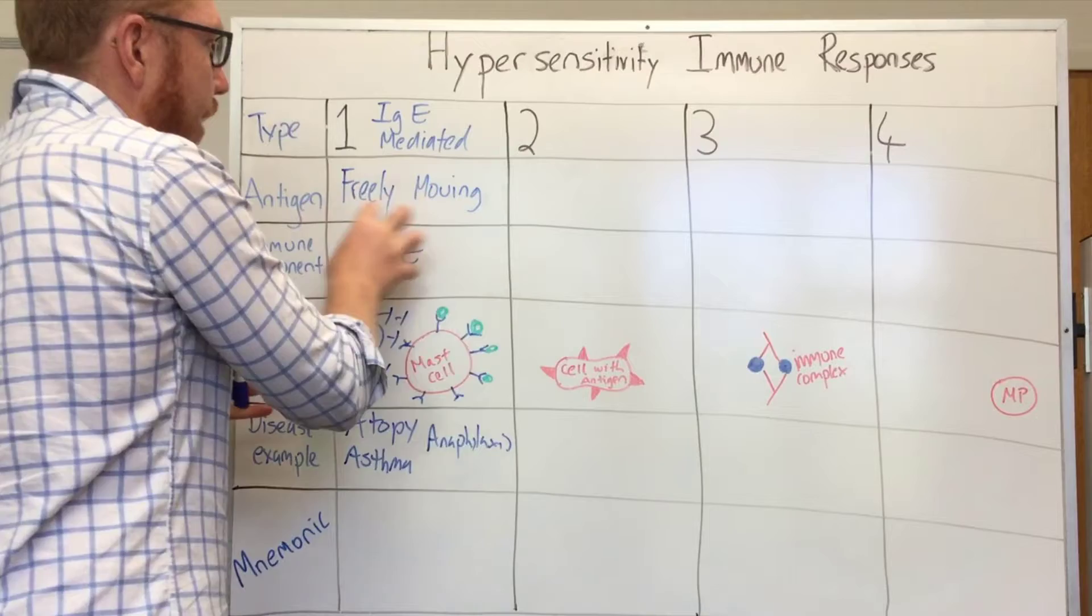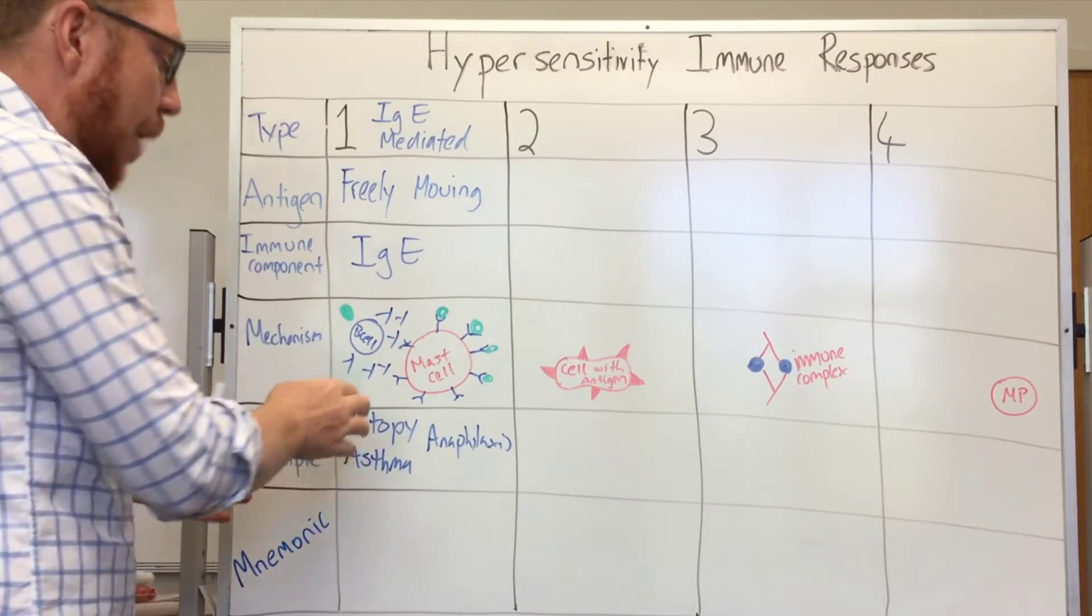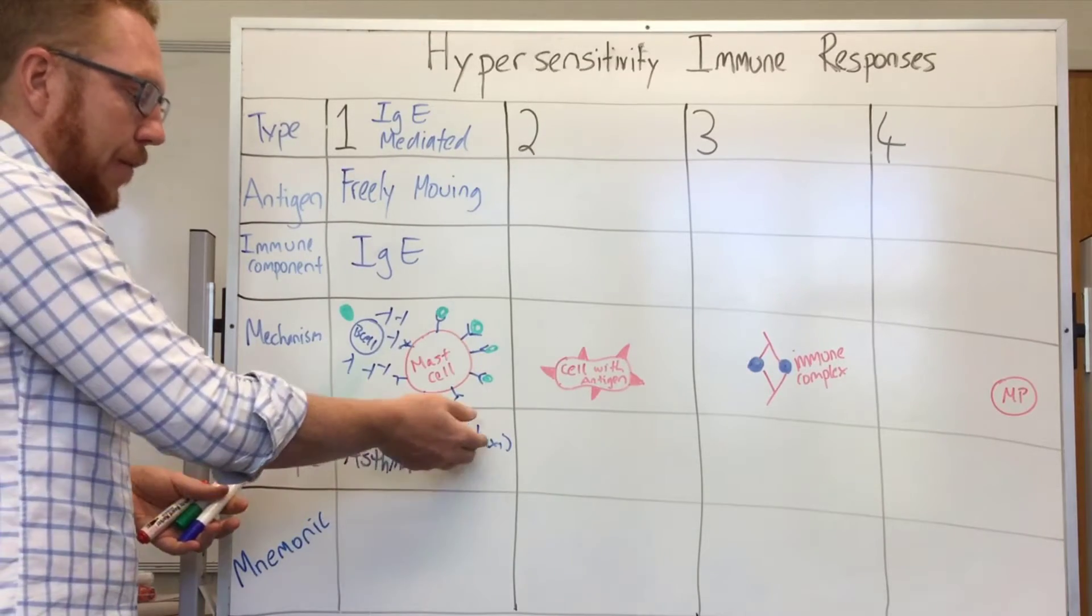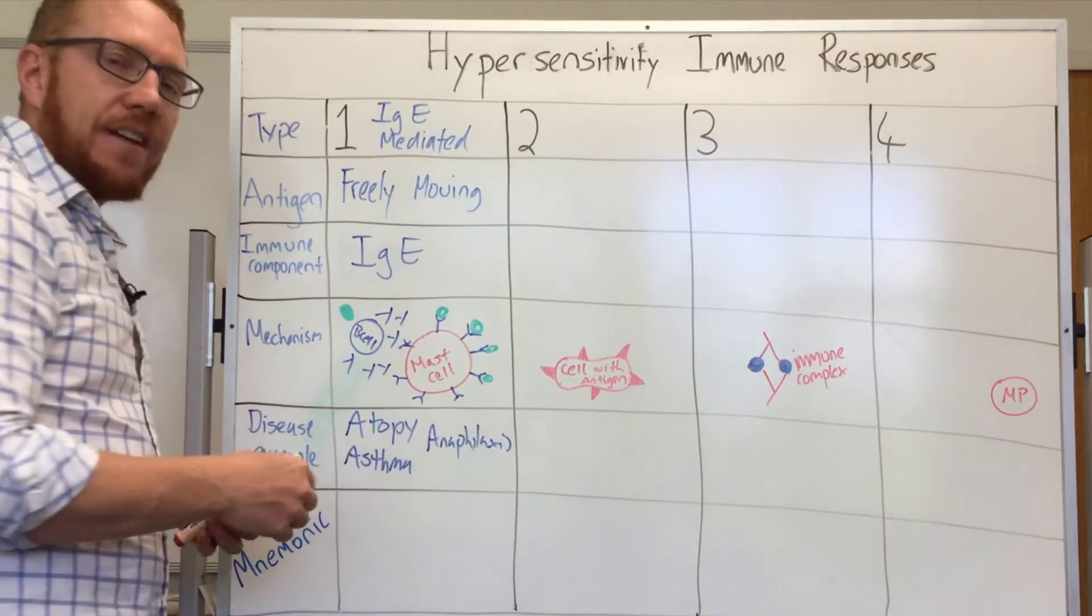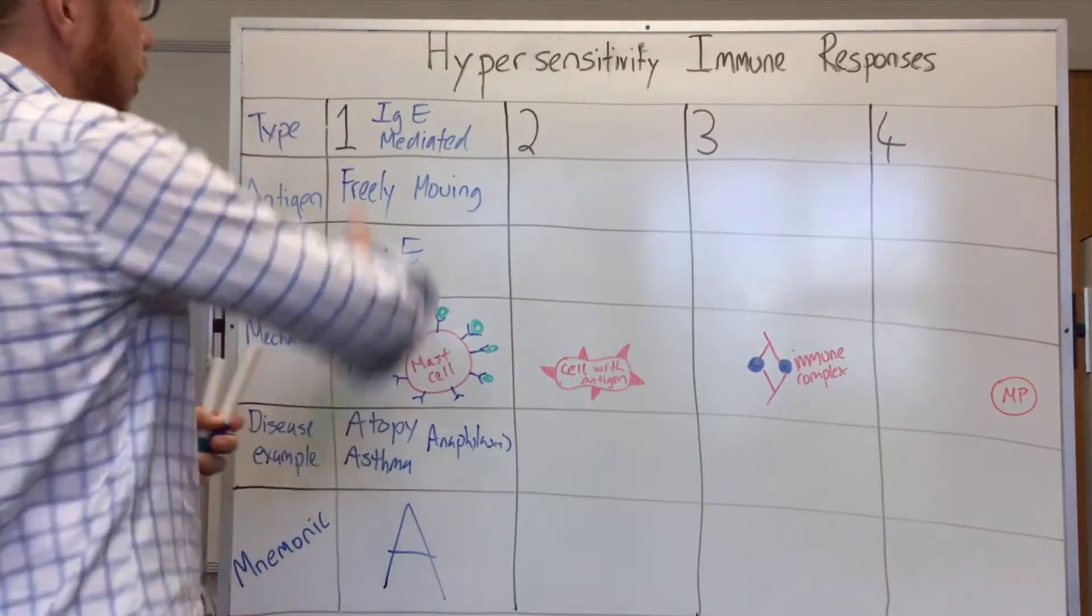Some examples of diseases are all centered around something called atopy, which is a type of allergic response. This could be allergic asthma or even anaphylaxis. That's a really exaggerated response where your blood vessels become really dilated, your blood pressure will drop quite significantly, your airway will close in, and this can actually lead to death if it's not rectified. This is a type 1 reaction centered around IgE and mast cells. Because we've got atopy, asthma, allergies, anaphylaxis, the mnemonic is going to be A.